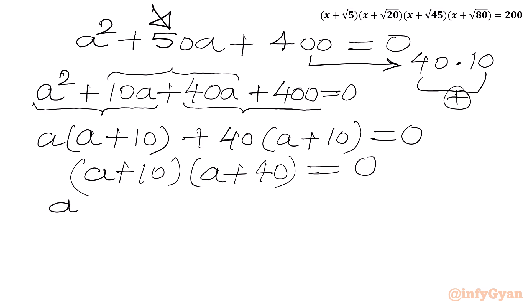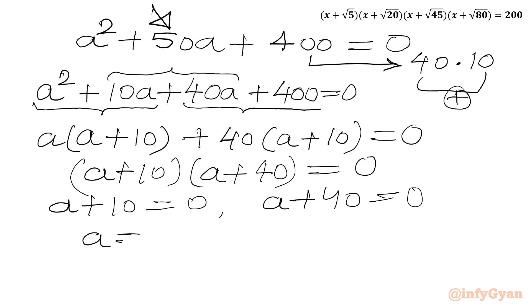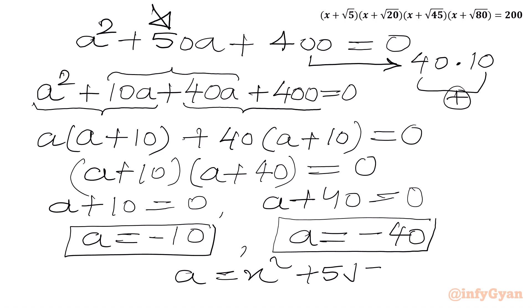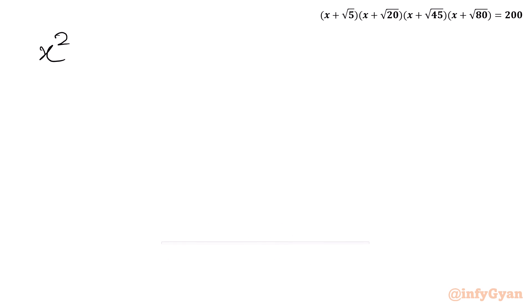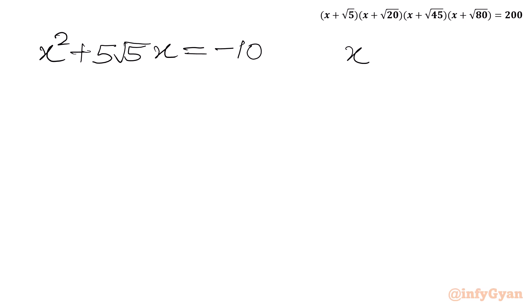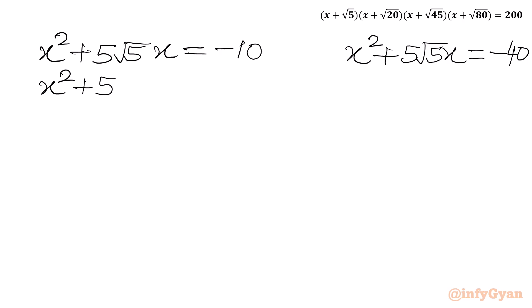From the zero product rule, either a + 10 = 0 or a + 40 = 0. So a = -10 or a = -40, where a = x² + 5√5·x. This gives us two quadratic equations: x² + 5√5·x = -10 and x² + 5√5·x = -40. Taking all terms to the LHS: x² + 5√5·x + 10 = 0.